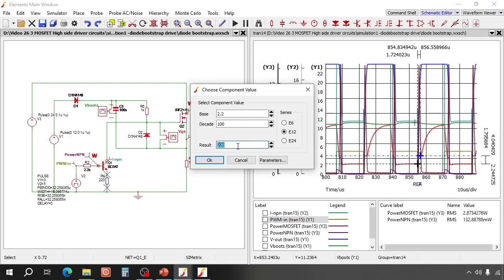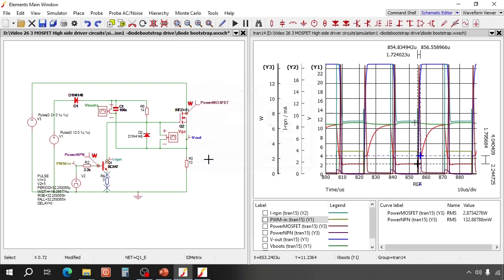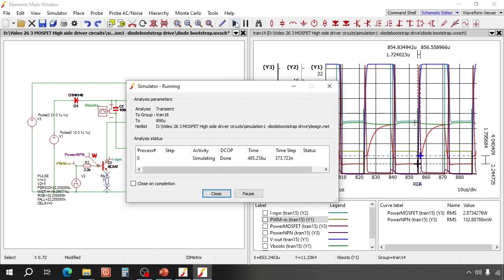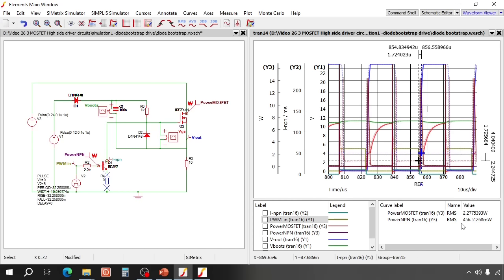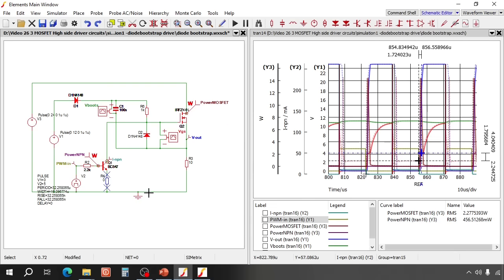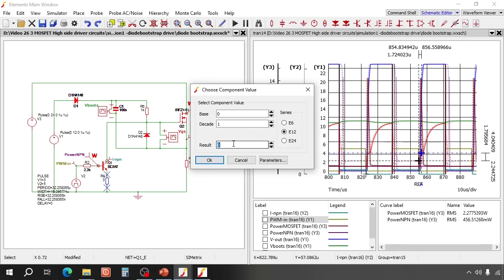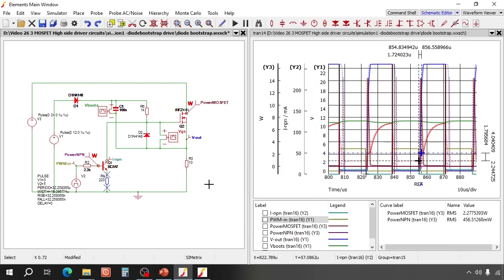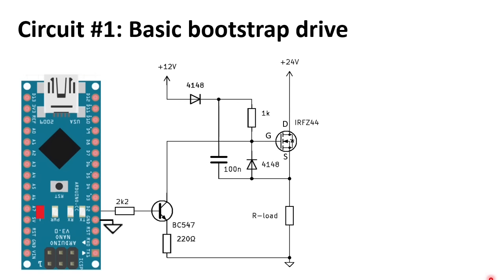Now let's short this 220 ohm resistor and simulate again. You see the losses in the NPN have increased to 450 milliwatt. This would mean that the transistor will become about 115 degrees at room temperature, so that is way too hot. So we see that this 220 ohm current limiting resistor is really needed.